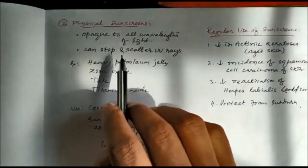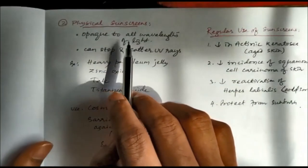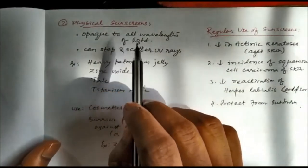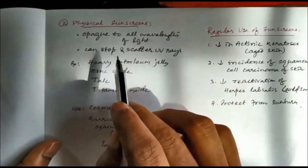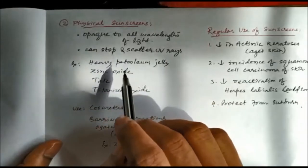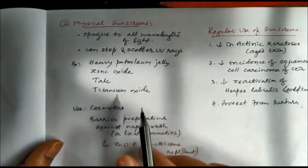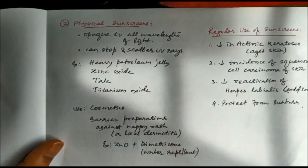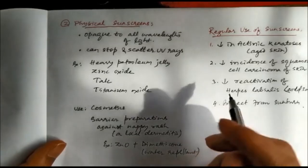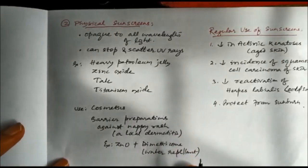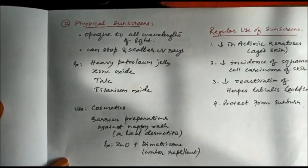Physical sunscreens are inorganic compounds that are opaque to all wavelengths of light and can stop and scatter UV rays. Examples include heavy petroleum jelly, zinc oxide, talc, and titanium oxide. These are used in cosmetics and also in barrier preparations against local dermatitis like nappy rash.